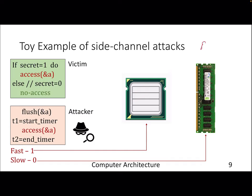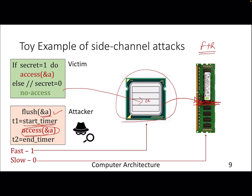A simple example of a cache attack is known as the Flush+Reload attack, or F+R. The assumption is that the victim and attacker share some portion of memory. The attacker wants to know whether the victim has accessed something. What the attacker does is flush a particular address — meaning it is evicted from the cache hierarchy into memory — then starts a timer and tries to access the same address. If the access is fast, it means the victim has brought that address into the cache.